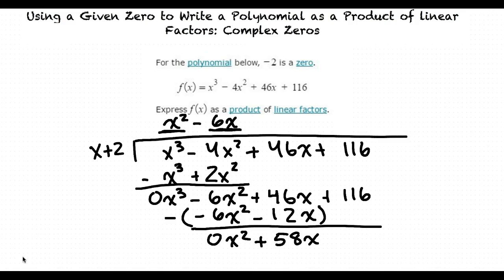We will then carry down our positive 116. We now need to find one more term, where that term times x equals 58x. This happens to be positive 58, and 58 times x is 58x, and then 58 times positive 2 is positive 116.